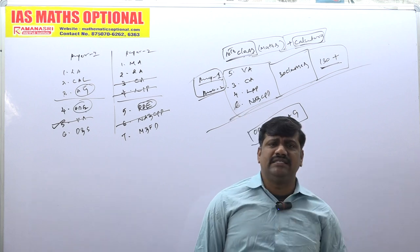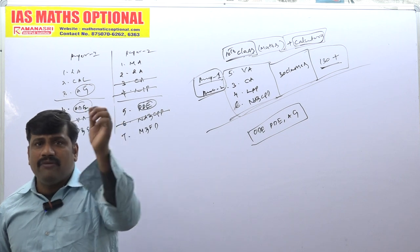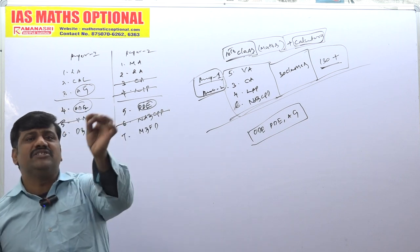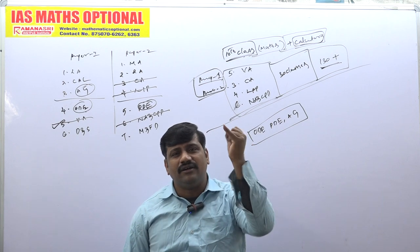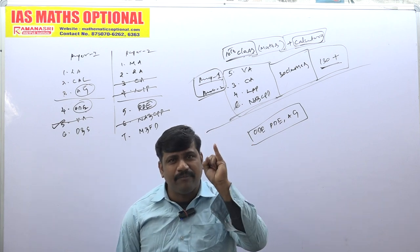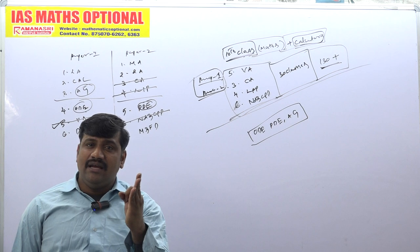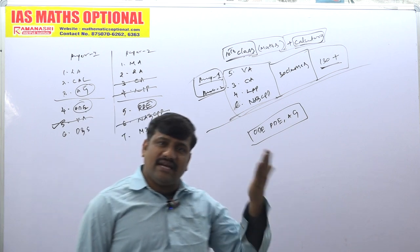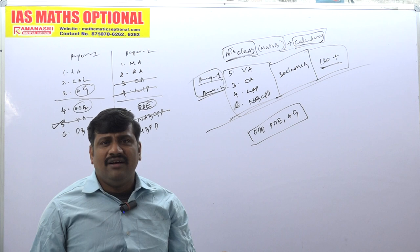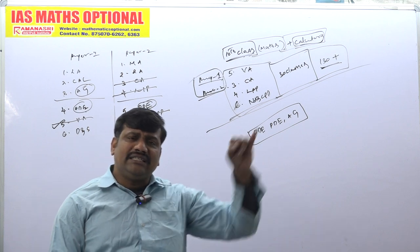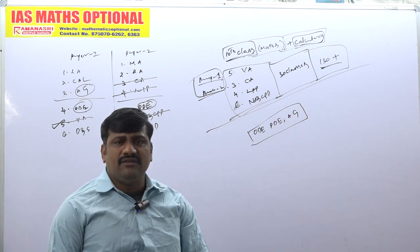For the sake of convenience, I know that this problem comes under the first order but not of first degree. Now, in that, the methods are: number one, solvable for P; number two, solvable for X or solvable for Y; or it is a Clairaut or reducible to the Clairaut. And the last one is the singular solution — nothing but a mixture of all these things.